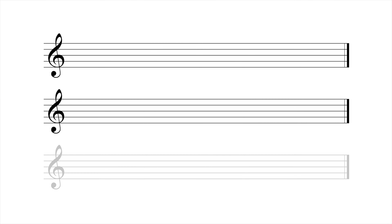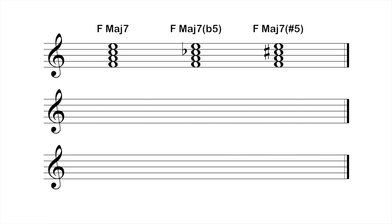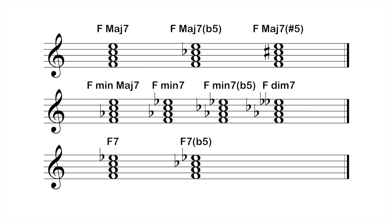So let's go through the seventh chords I showed in these videos: major seven, major seven flat five, major seven sharp five, minor major seventh, minor seventh, half diminished seventh (also known as a minor seventh flat five), fully diminished seventh, dominant seventh, dominant seventh flat five, and the dominant seventh sharp five.